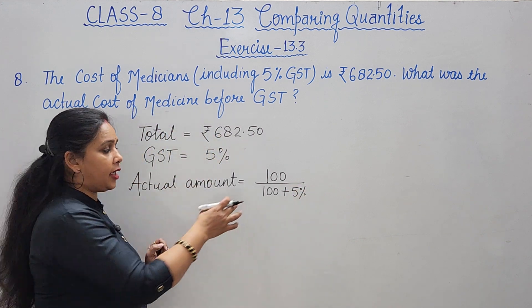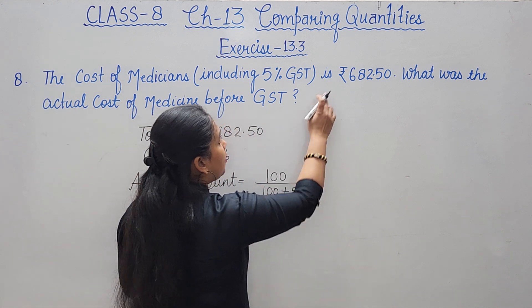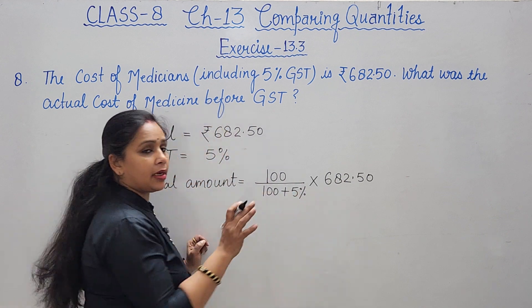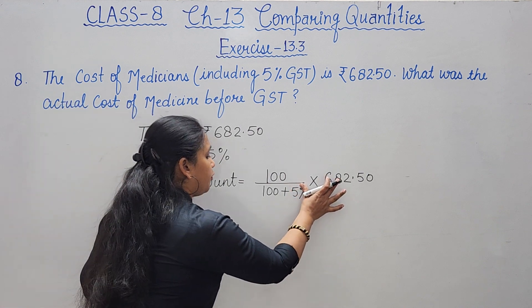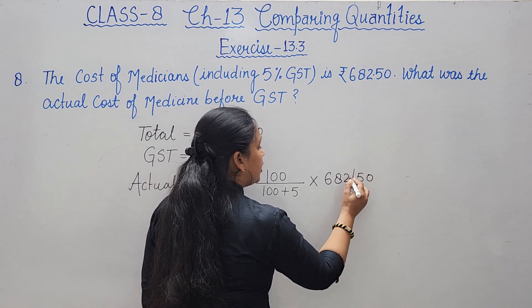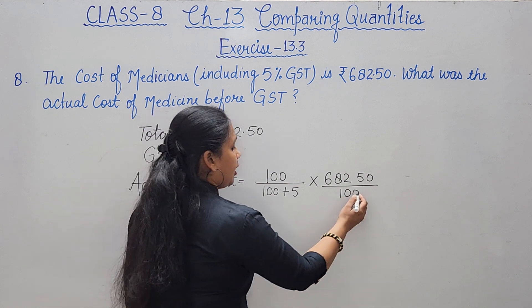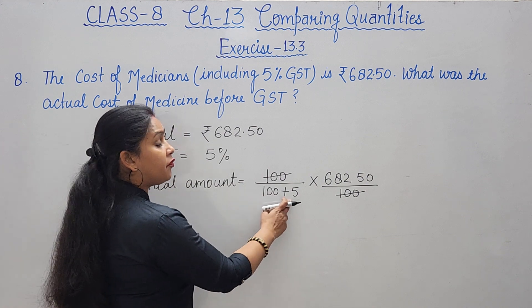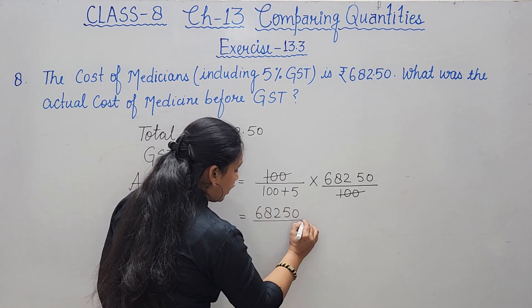We consider the original price as 100, add 5% GST, giving 105 total. We paid 682.50. To remove the decimal in 682.50, multiply numerator and denominator: becomes 68250 / 105.